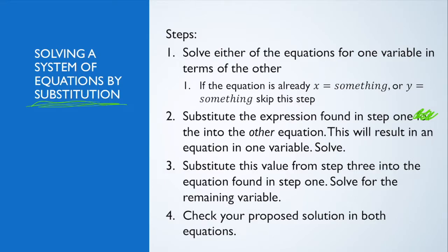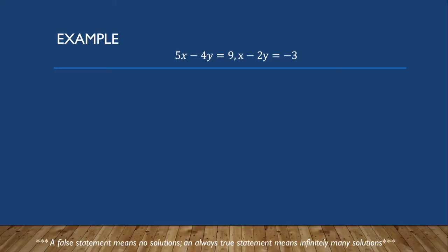You substitute the value you found from step three into the equation you found in step one and solve for the remaining variable. Then you check your proposed solution in both equations. Let's go through an example so you can see what this looks like.